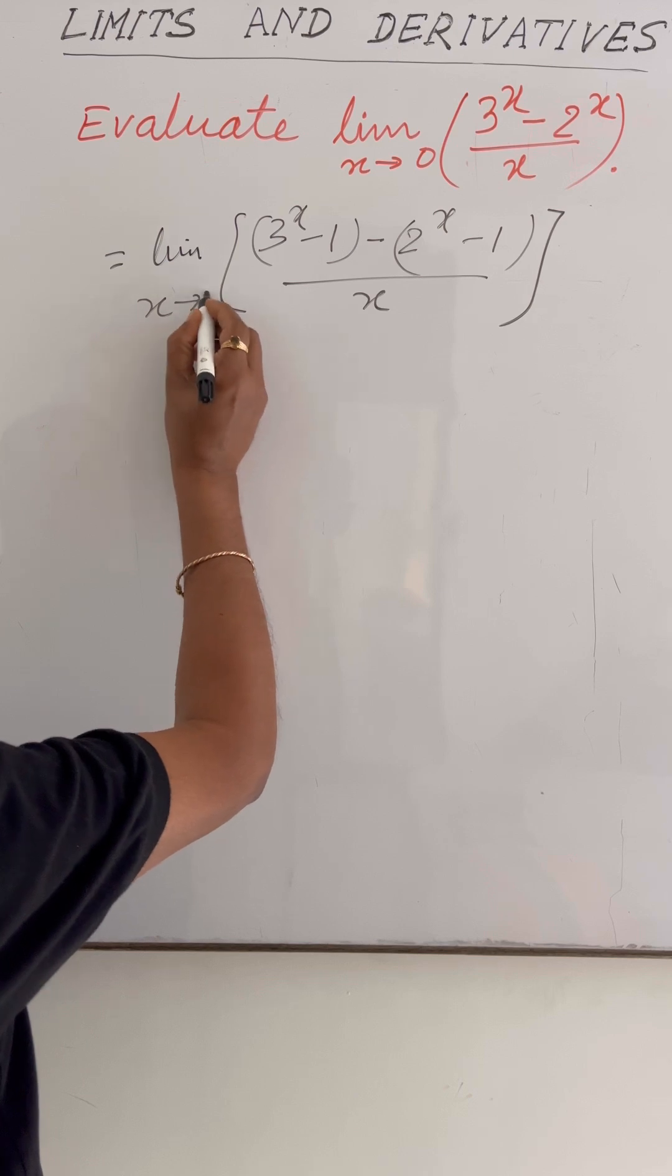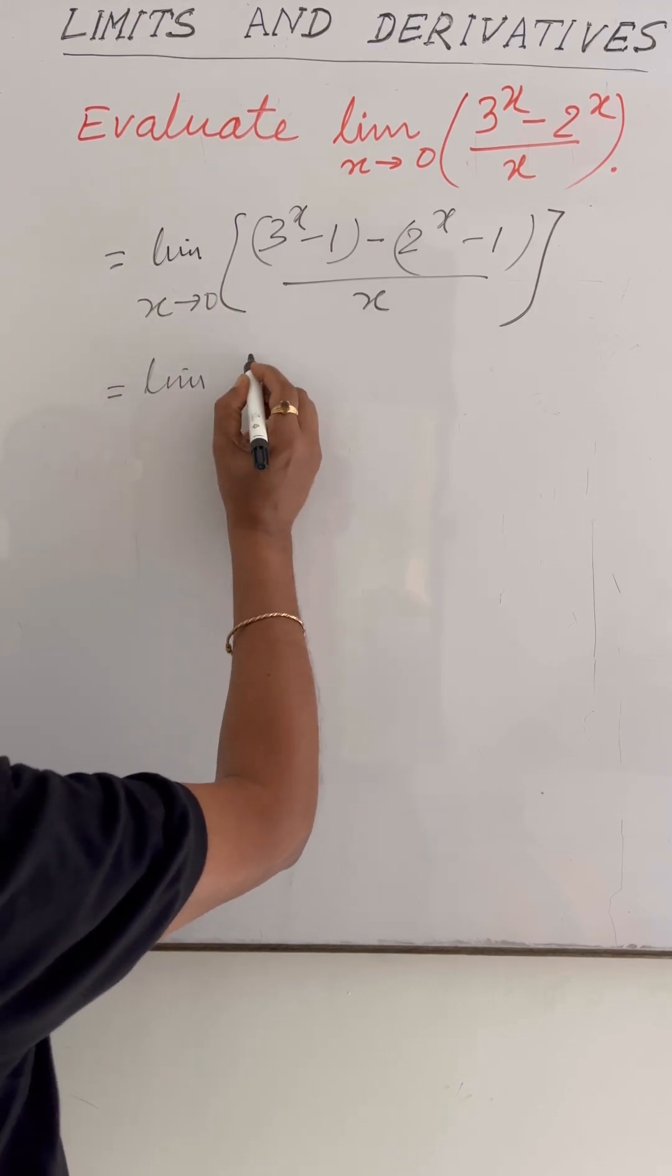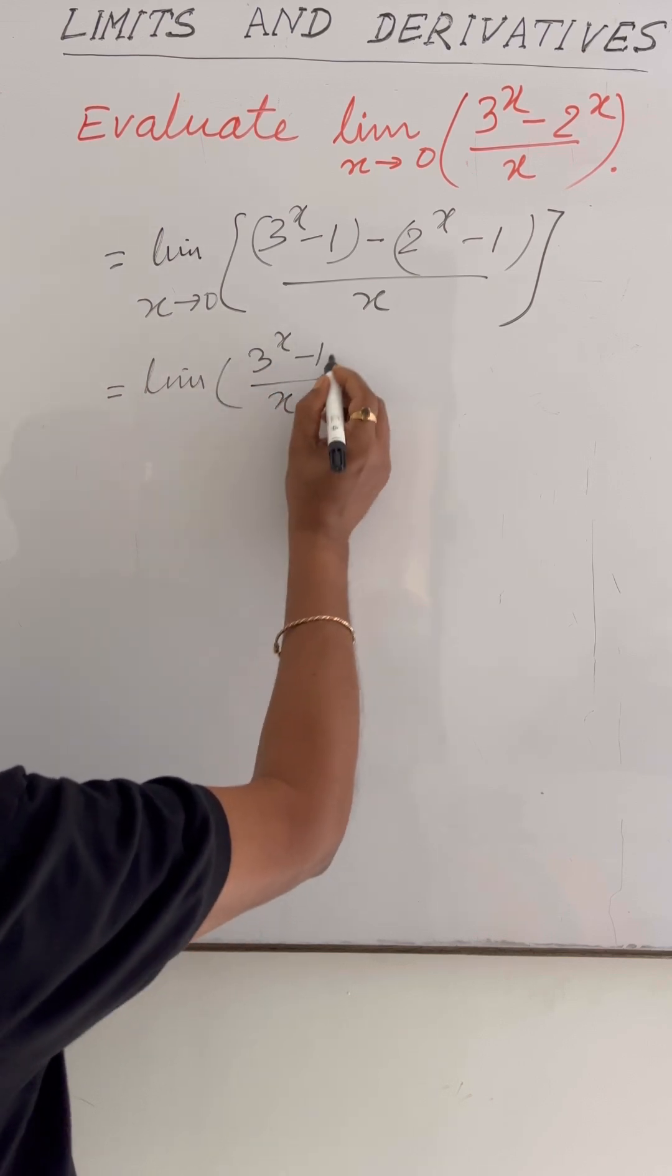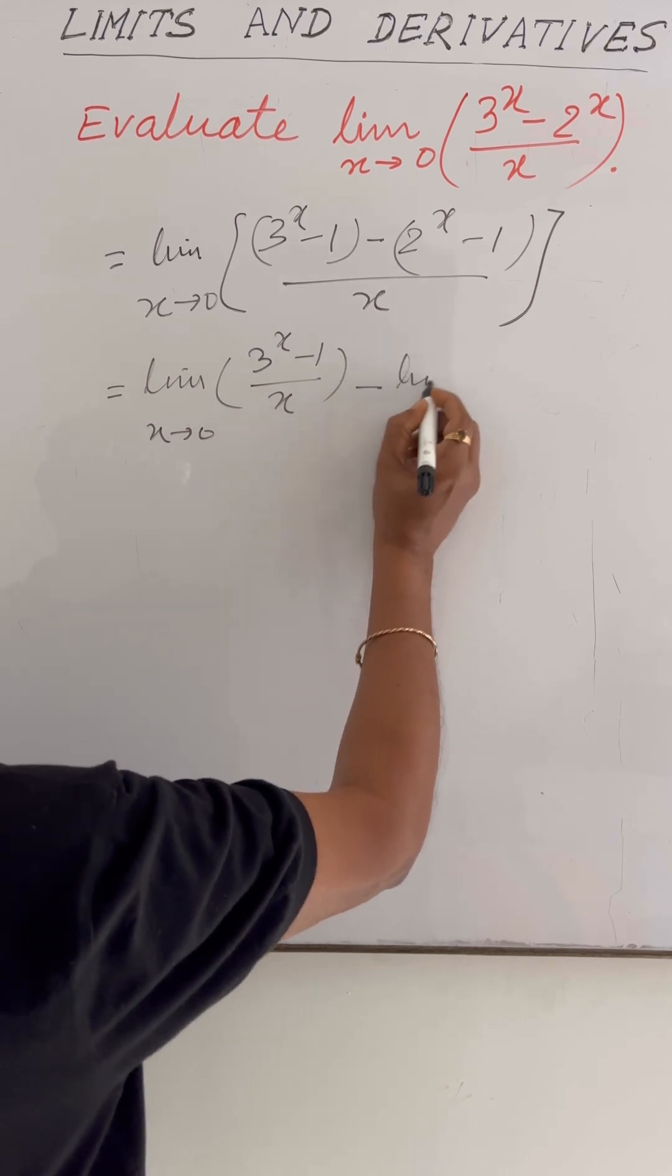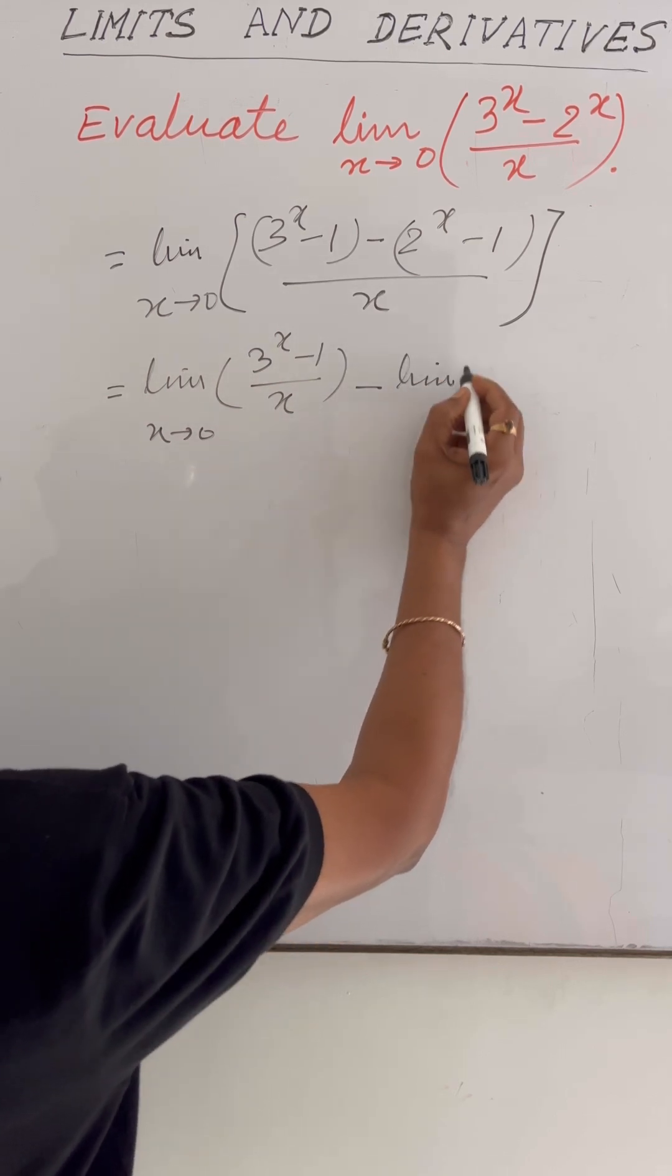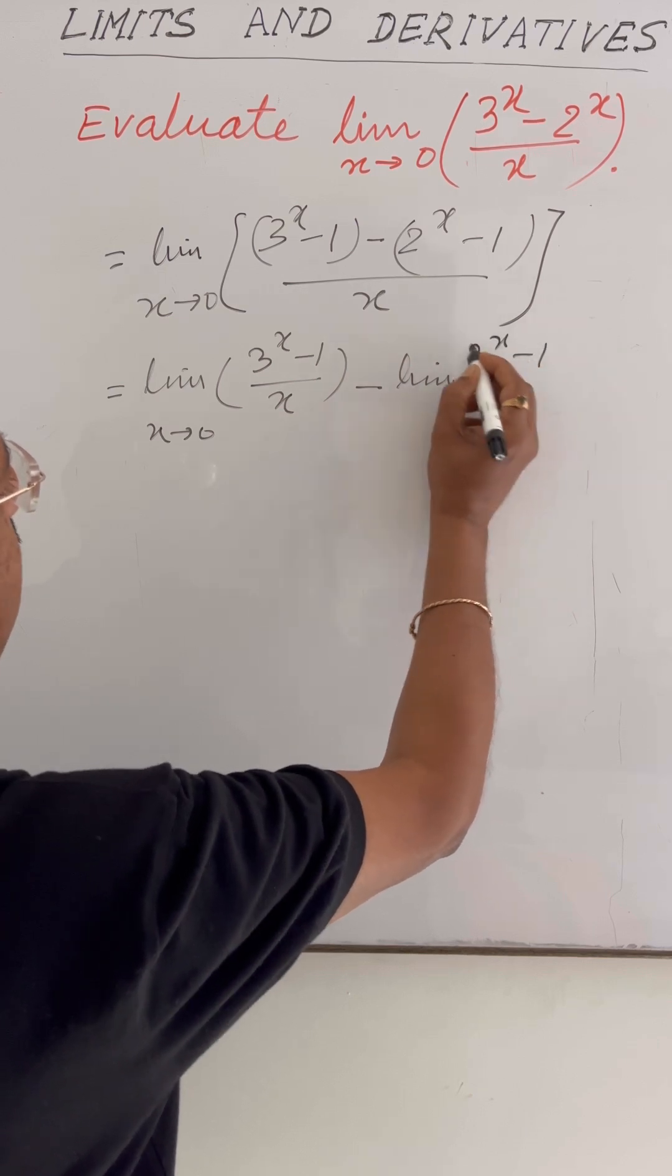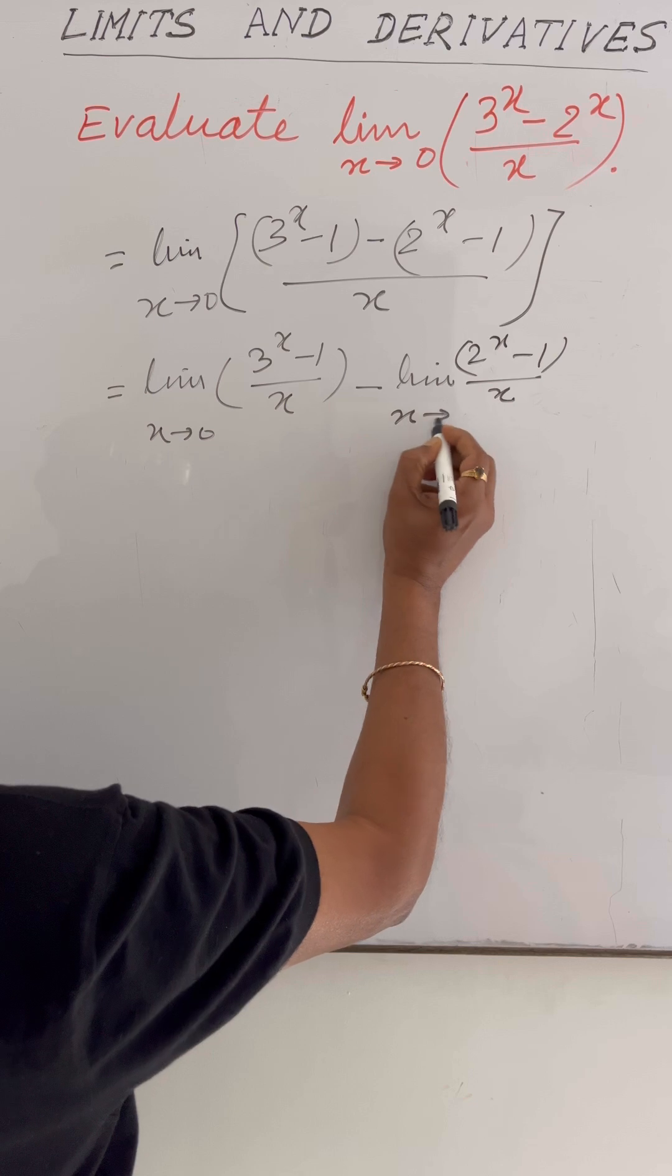And here x tends to 0. This is equal to limit of 3 to the power x minus 1 by x when x tends to 0, minus limit of 2 to the power x minus 1 upon x when x tends to 0.